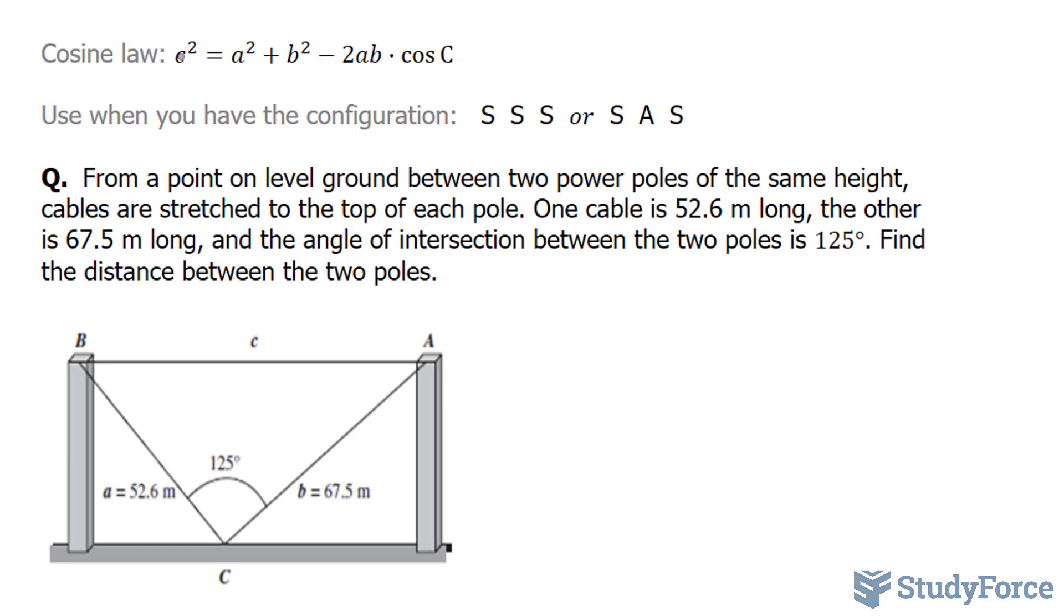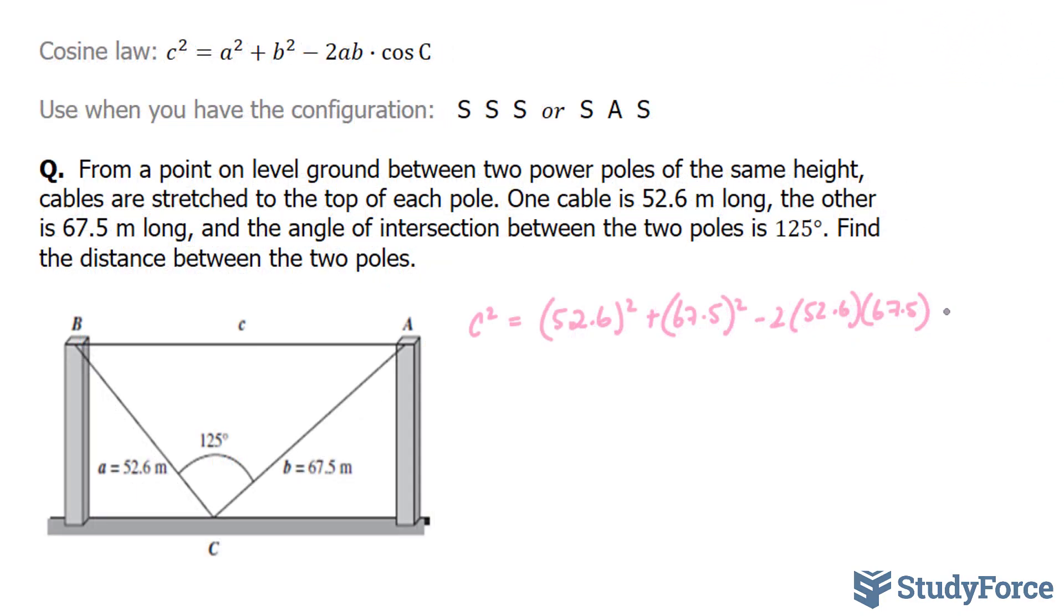C is our target. That's what we're looking for. And we have big angle C at 125. So let's set up our equation. C squared is equal to 52.6. This is our A. Plus 67.5. That's also squared. Minus 2 times 52.6 times 67.5. Cosine C at 125.